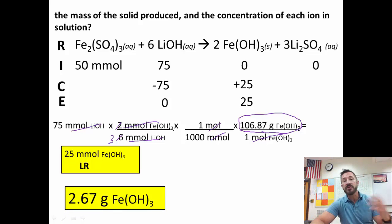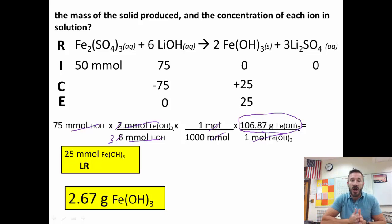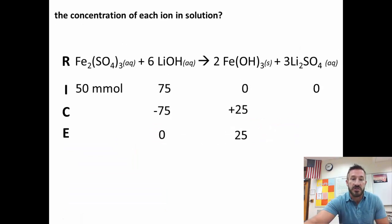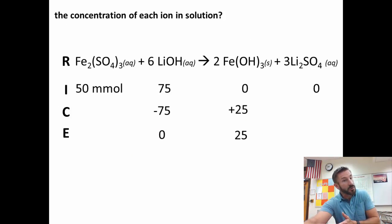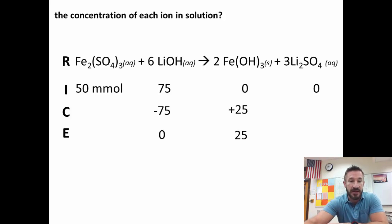Now we have one thing left: figuring out the concentration of each ion in solution. This is what makes it an AP-level problem — it differentiates first-year chemistry from AP chemistry. To do that, we need to fill out the rest of the RICE table using the limiting reactant. We'll use the 75 millimoles of lithium hydroxide to determine how much iron(III) sulfate was used and how much lithium sulfate was formed.